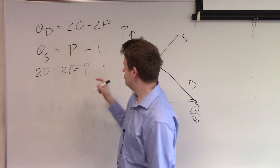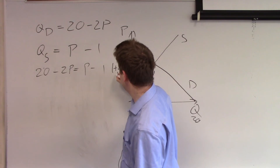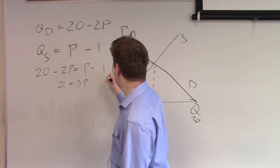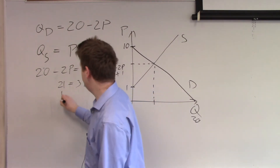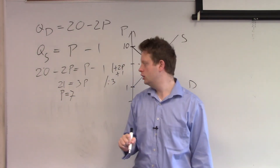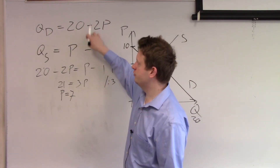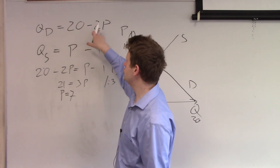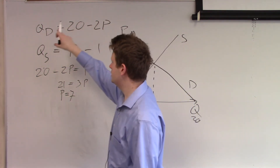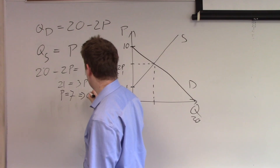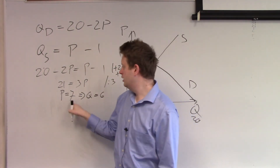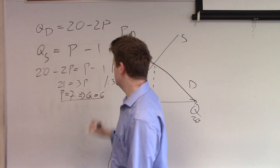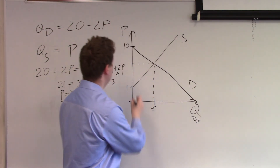We add 2P and add 1 to both sides and get 21 equals 3P, so P equals 7. Plugging 7 back into the demand equation: 20 minus 2 times 7 equals 20 minus 14 equals 6, so Q equals 6. Checking supply: 7 minus 1 also equals 6. So the equilibrium is Q equals 6 and P equals 7, and we can label these points on the graph.